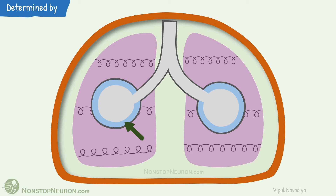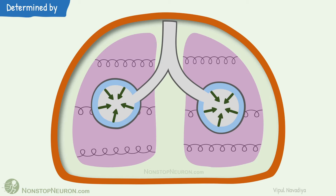Now, surface tension. The alveolar wall is lined with fluid. This fluid comes in contact with air in the airway, so we have an air-water interface here. Surface tension at this interface tends to collapse the airway, and in doing so, it exerts elastic force on the lungs. Thus, these two forces determine lung compliance.